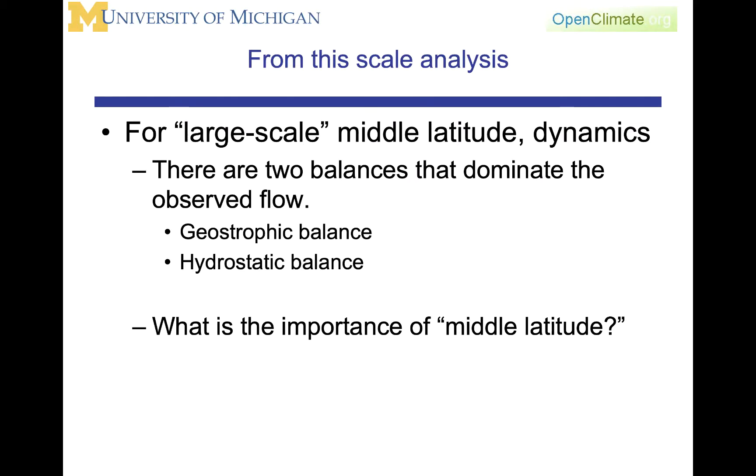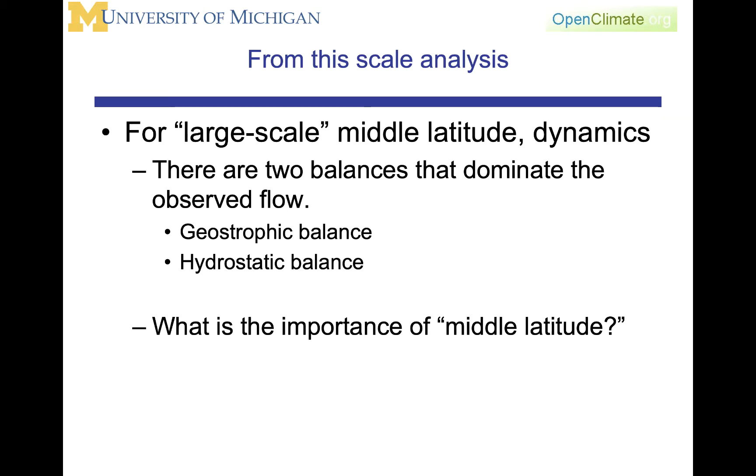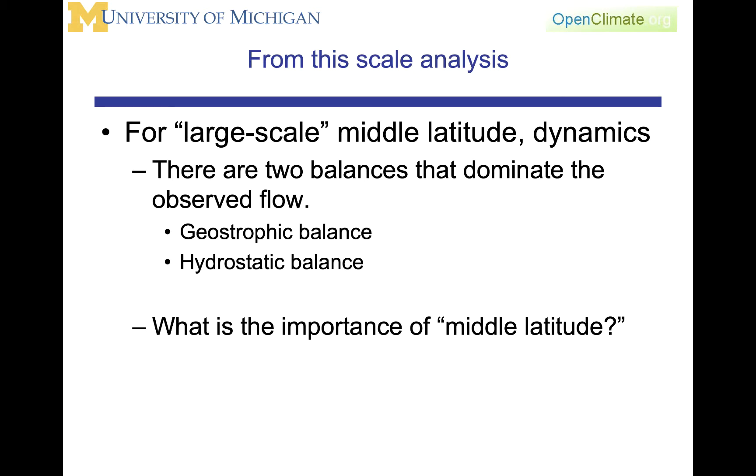From the scale analyses that we have done for large-scale mid-latitude dynamics, there are two balances that dominate the observed flow, the geostrophic balance and the hydrostatic balance. The hydrostatic balance, of course, occurs everywhere in the atmosphere. However, we have restricted this to something we call middle latitudes. It could be middle latitudes or high latitudes because what is different about dynamics is what goes on in the tropics.